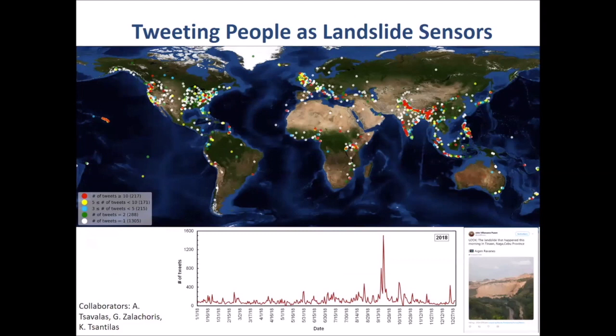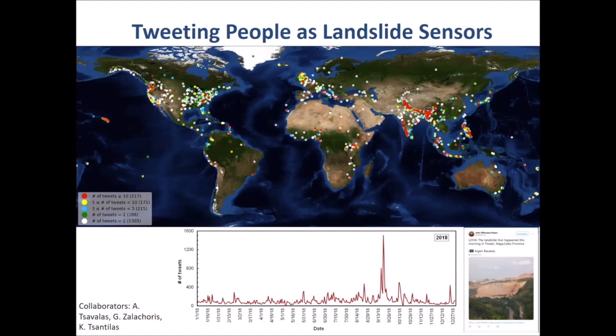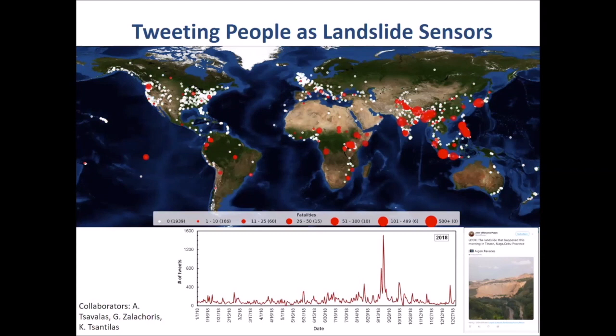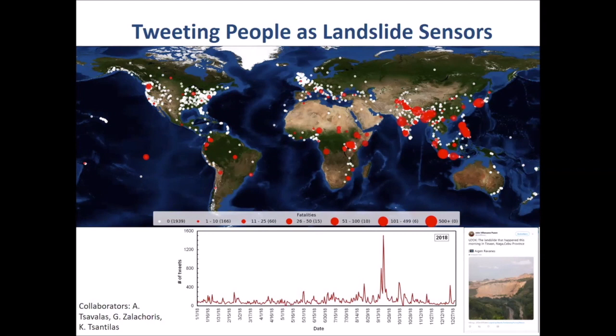Last but not least, to monitor landslides, we can also use people as sensors. For the last three years, we have been tracking social media activity on Twitter related to landslides, collecting about 50,000 tweets each year, analyzing them, aggregating them, and data mining them to extract characteristics related to landslides. We are thus able to identify the location, size characteristics, and consequences of thousands of landslides on the planet, giving us spatially distributed information about landslide susceptibility areas globally.